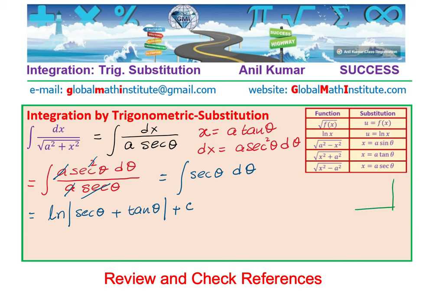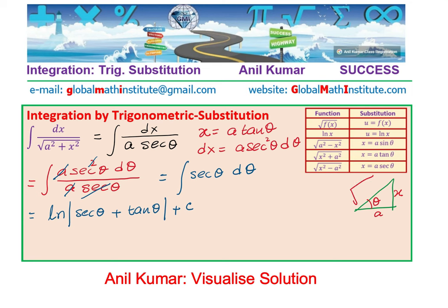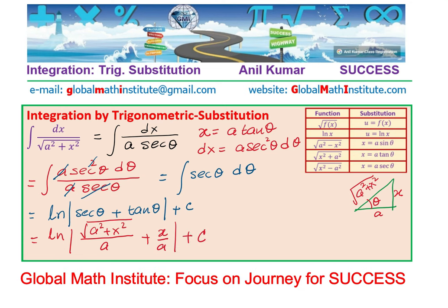We don't stop here — we use the triangle to substitute back. Since tan θ = x/a and the hypotenuse is √(a² + x²), secant θ equals √(a² + x²) over a. So the integral becomes ln of the absolute value of √(a² + x²)/a plus x/a, plus C.